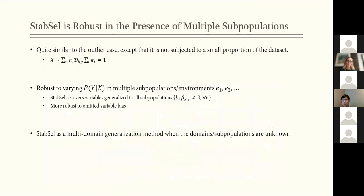And one other advantage we're going to skim through is that it's more robust in the presence of multiple subpopulations. So it's very similar to the outlier case, but now it's not just a small part of your data set, but you can have two, three, four different environments derived from different distributions. So the method of stability selection is great at recovering variables that are contributing in all the environments. So it ignores variables that are unstable because they're only effective in certain subpopulations.